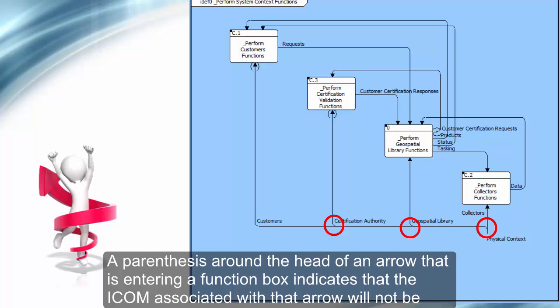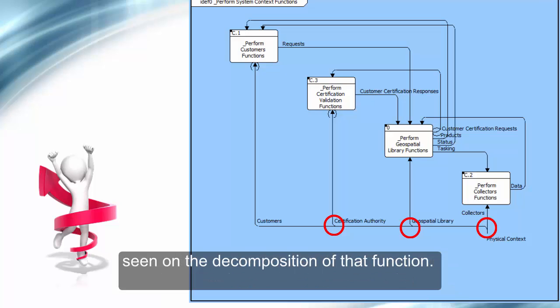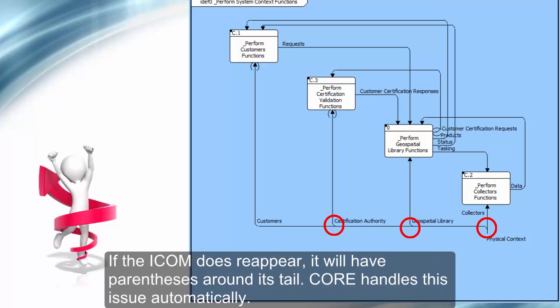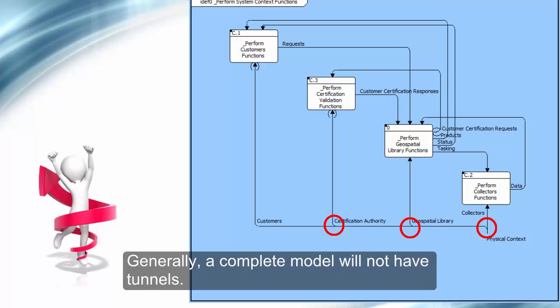A parenthesis around the head of an arrow that is entering a function box indicates that the ICOM associated with that arrow will not be seen on the decomposition of that function. If the ICOM does reappear, it will have parentheses around its tail. Core handles this issue automatically.